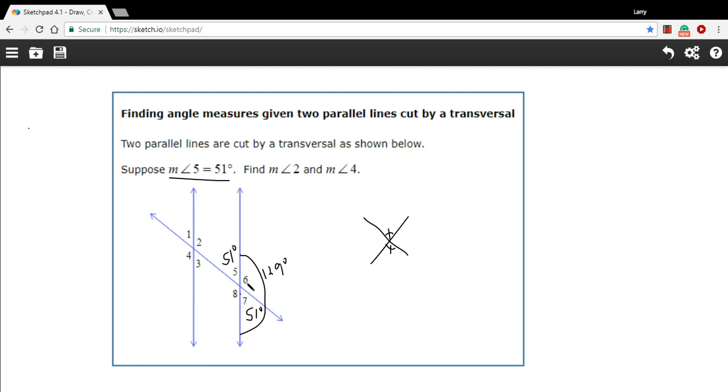Aha, but now we have another vertical angle here. 6 and 8 are vertical angles, so that's 129. And now here's the really cool part. Everything I just did over here is going to be the same over here. Because these two lines are parallel, this other line is gonna cross them at exactly the same angles.